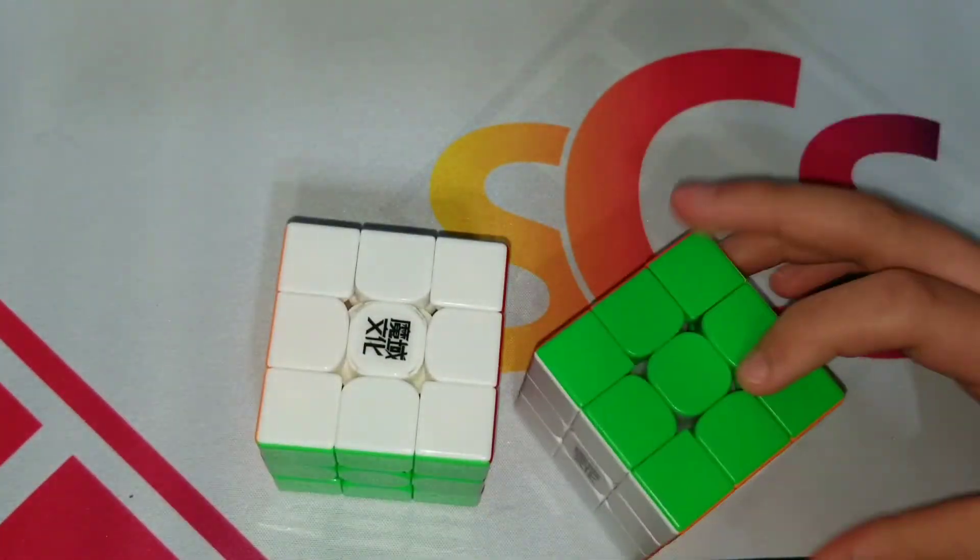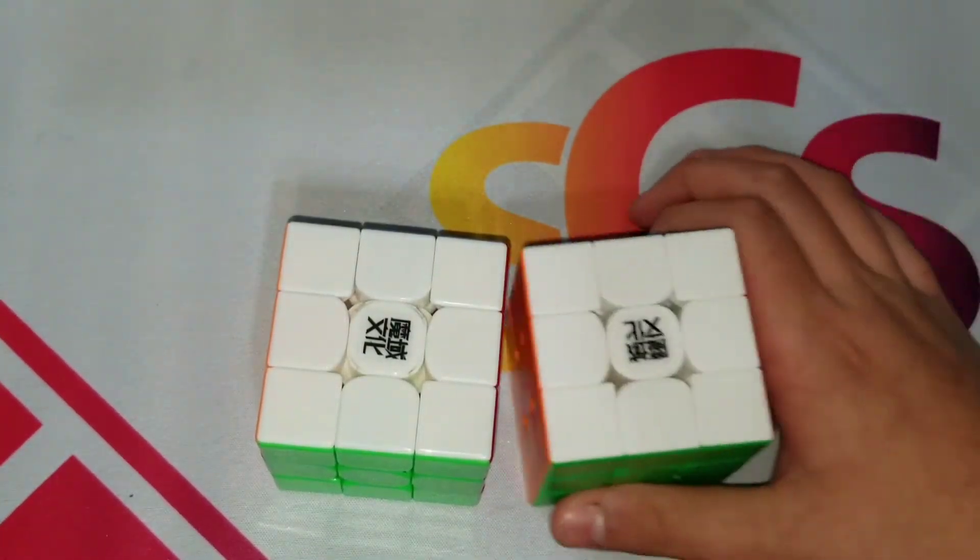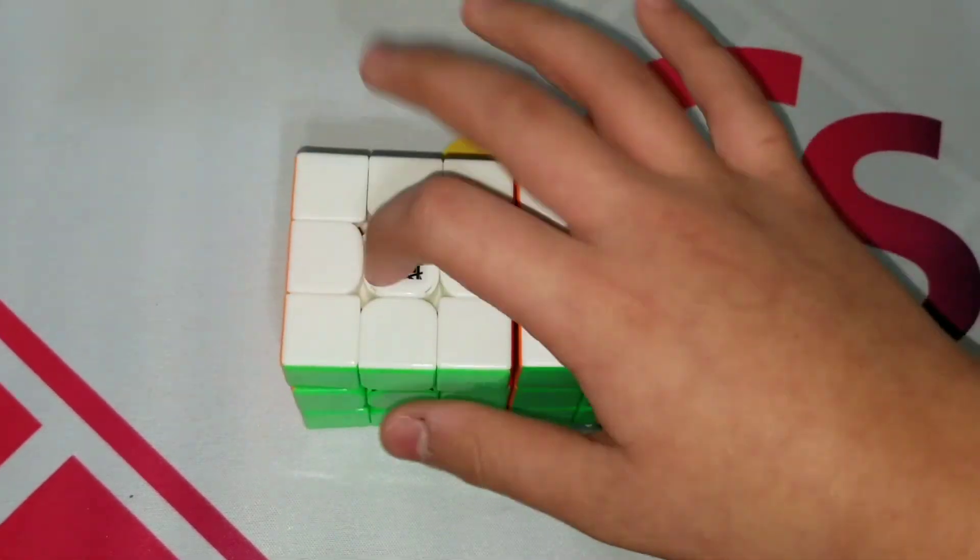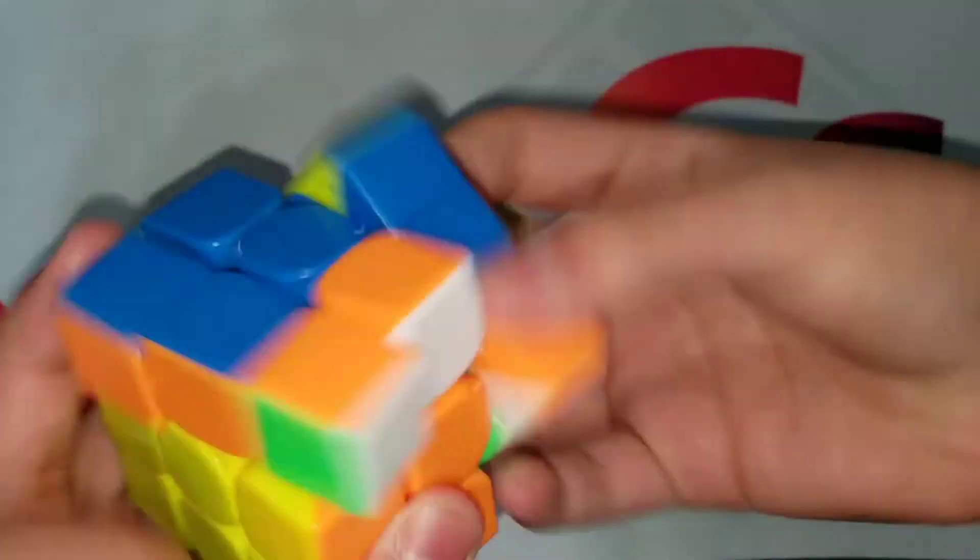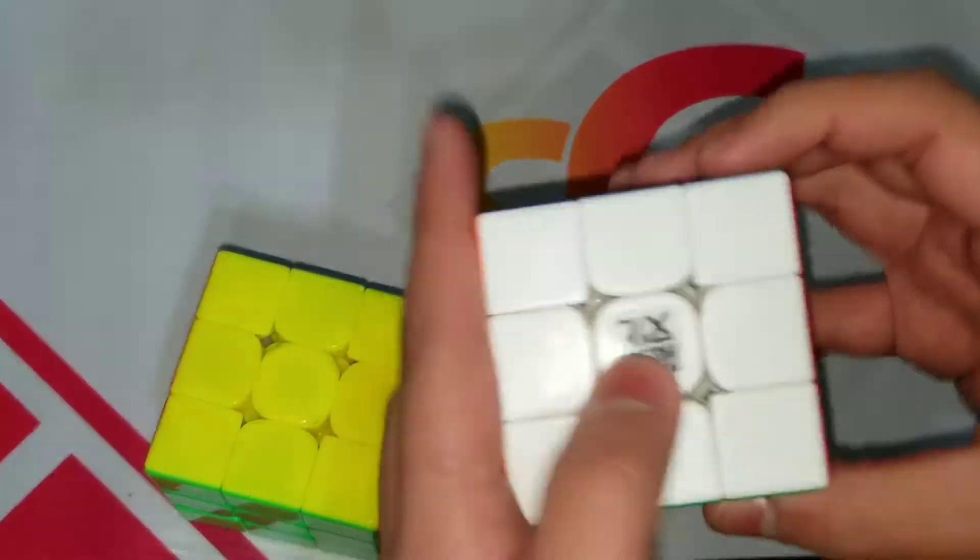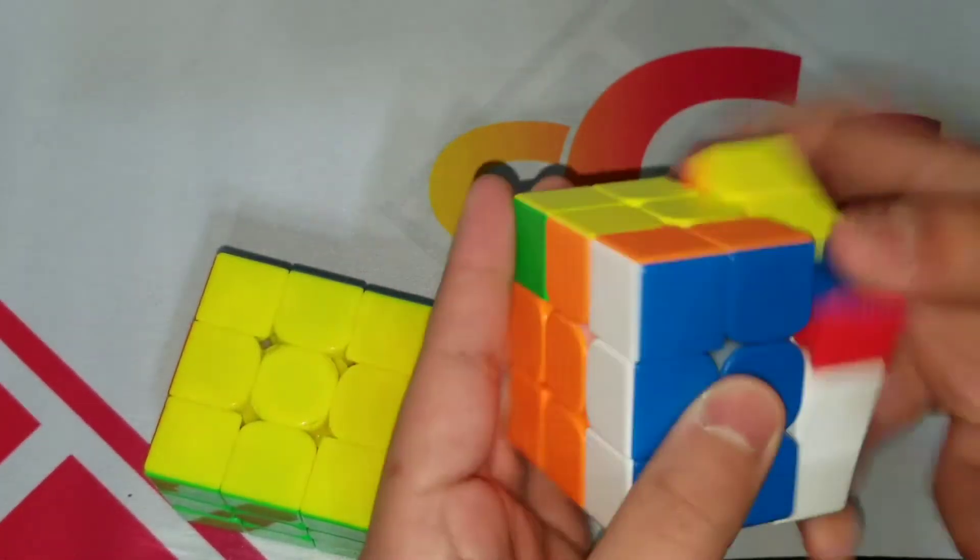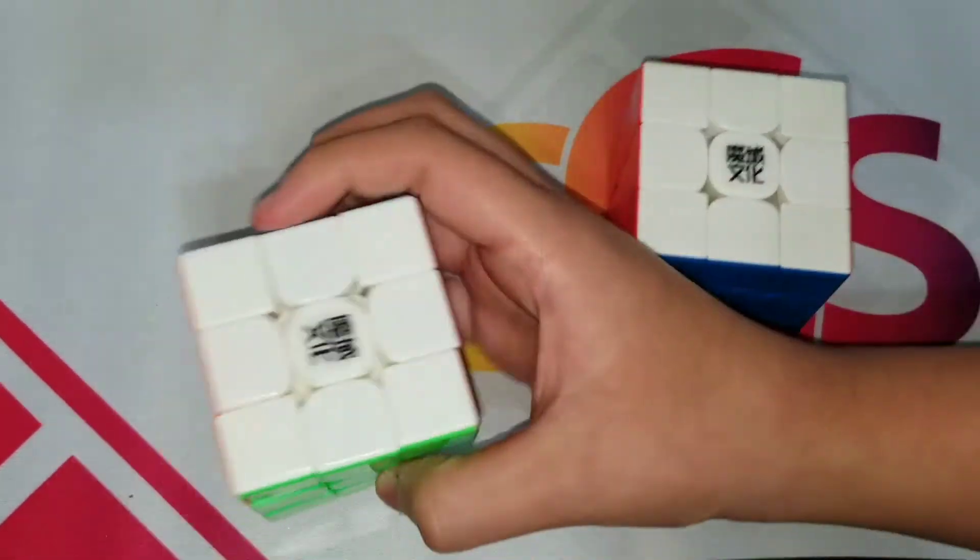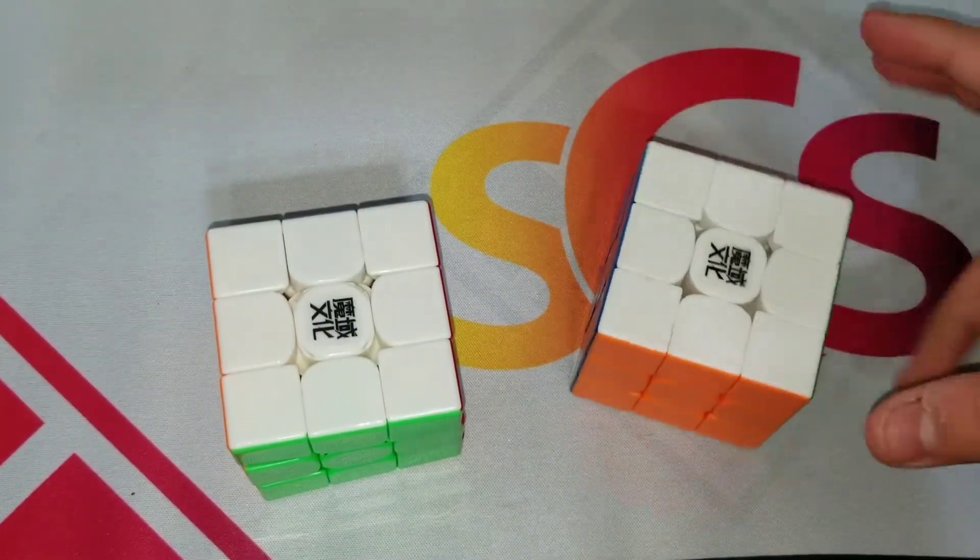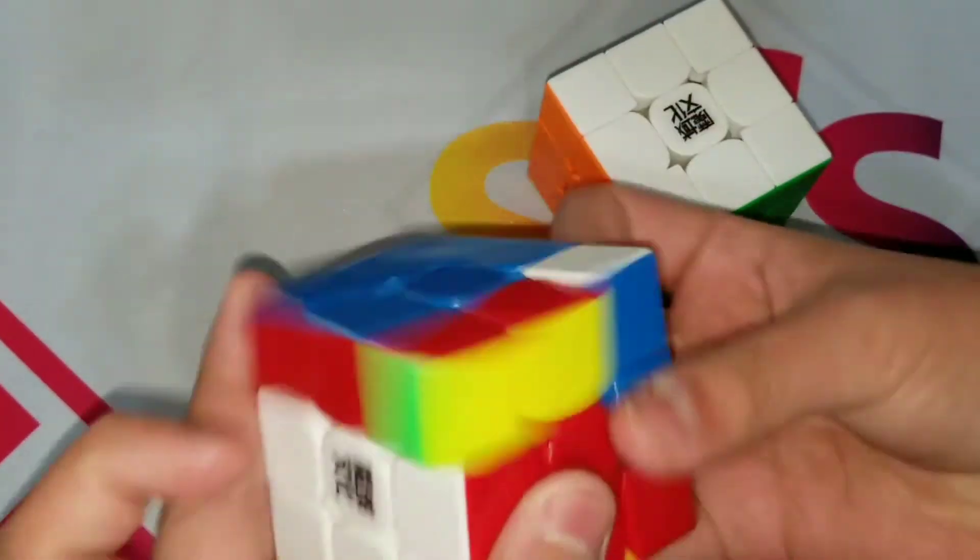On corner cutting and speed, I think that the WRM is a little bit faster because it's a little bit more broken in. But it is faster because I already put lube in this cube. This cube comes pre-lubed, but as you can see it sounds very dry and loud. But this cube is faster, so on speed the WRM is better.